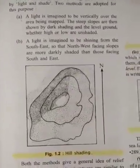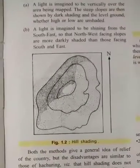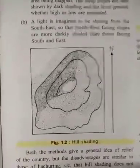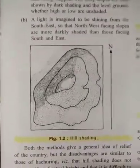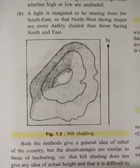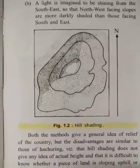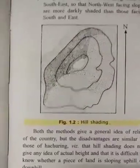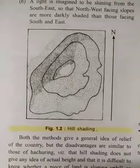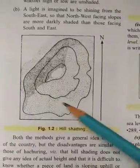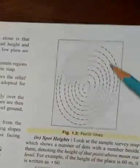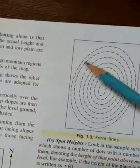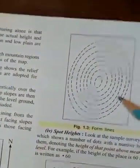Third is form lines. Form lines are control lines that show only approximate heights above sea level, as they are used to indicate the elevation of areas that are not accessible for proper survey. They are drawn as broken lines and are called form lines — you can see the broken lines in the image.